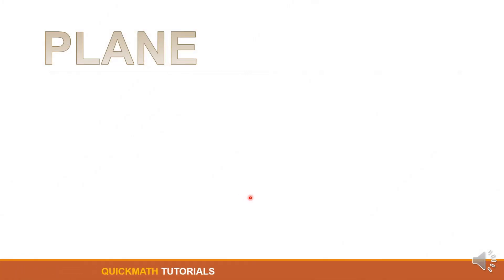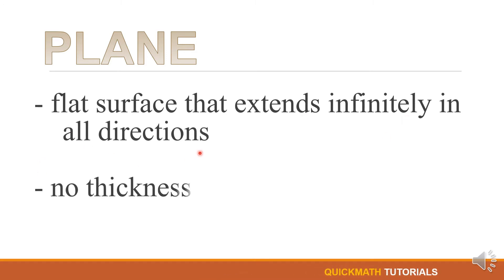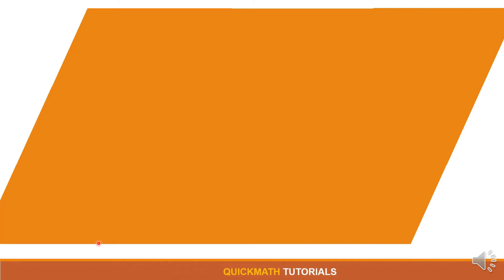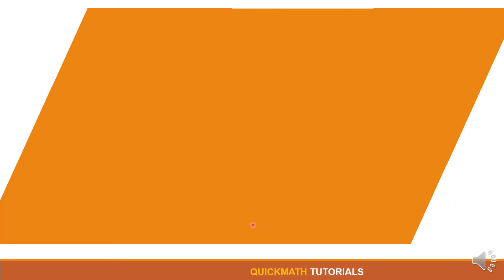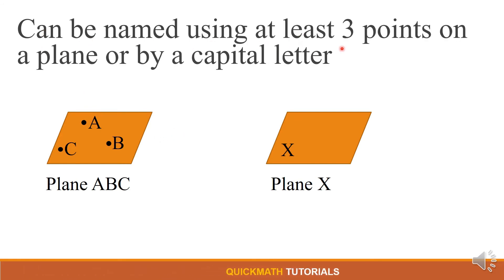Now let's discuss the plane. A plane is a flat surface that extends infinitely in all directions; it has no thickness. This flat surface can extend upward, downward, and sideward. So this small illustration of a plane can get even wider, since a flat surface extends in all directions infinitely.